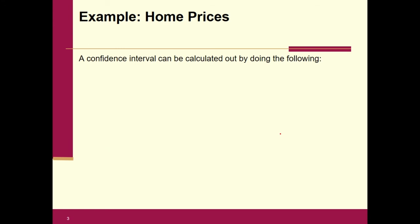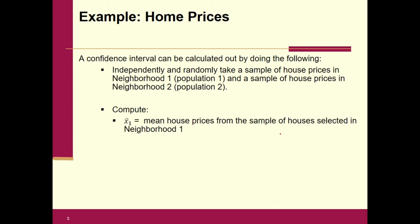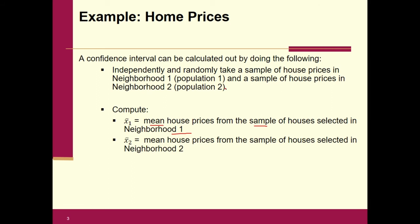A confidence interval can be calculated by doing the following. We can independently and randomly take a sample of prices in neighborhood one and neighborhood two from the two populations. We'll compute x-bar one — the mean house price from the sample of houses selected in neighborhood one — which is the sample mean from the first group. Then do exactly the same thing and call that x-bar two from population number two. Calculate the mean of those houses and call it x-bar two.